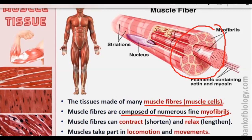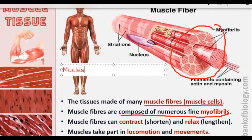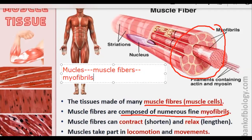In myofibrils, we can see that there are filaments. These filaments contain actin and myosin, which are further packed within the filaments. So basically, muscles are made up of many muscle fibers, muscle fibers are made up of many myofibrils, and myofibrils are the small fibers.